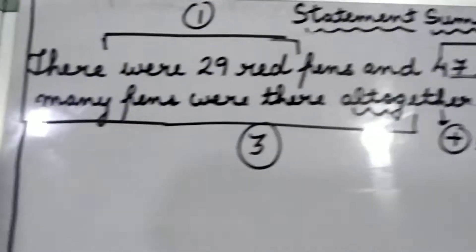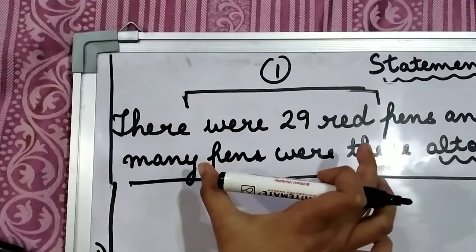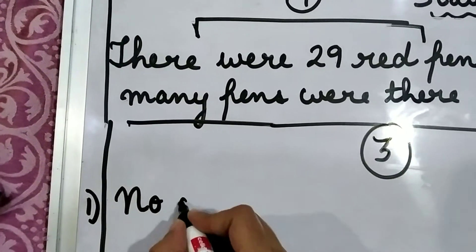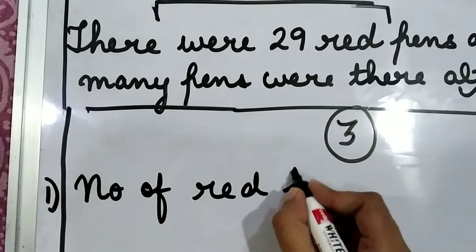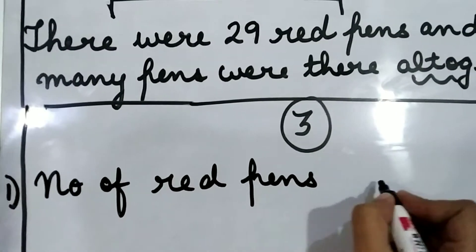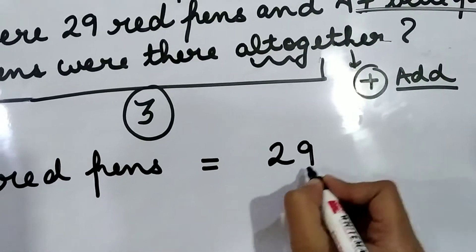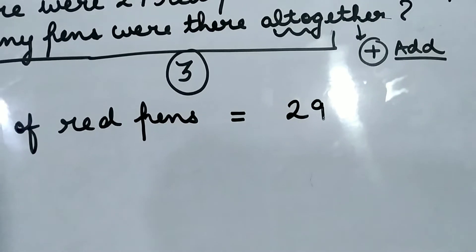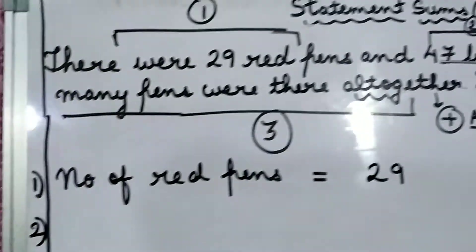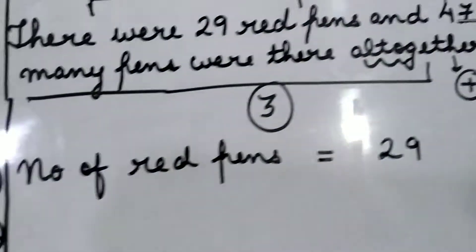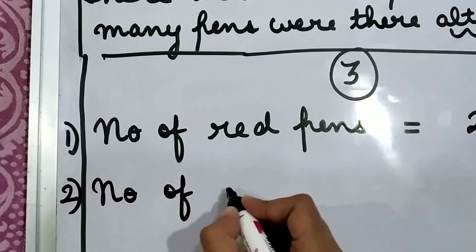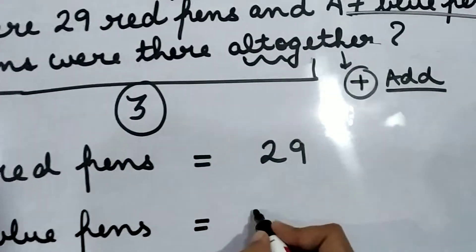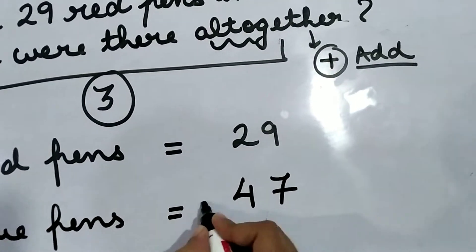Let's write down the statements. The first statement will come from the first part: there were 29 red pens. So we are going to write it like: number of red pens equals 29. You need to leave one box here because in this box you are going to put the symbol of addition. Then leave one line and write down the second part: number of blue pens — how many blue pens? 47.